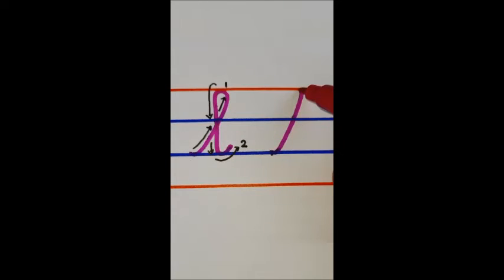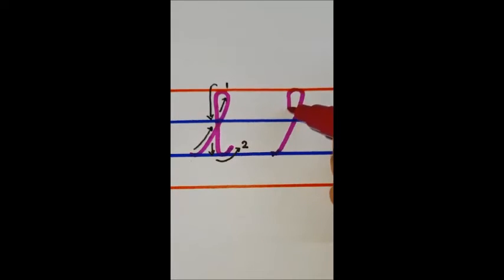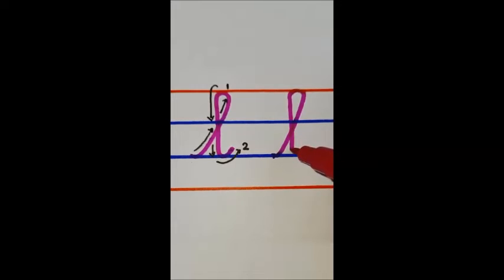In the second step, we will make a loop and draw a line downwards in a straight manner and touch the third line.